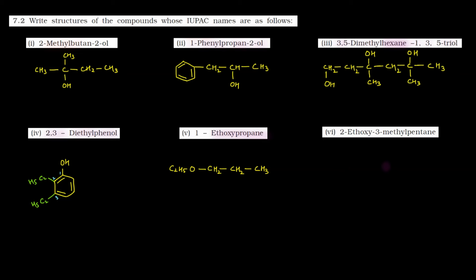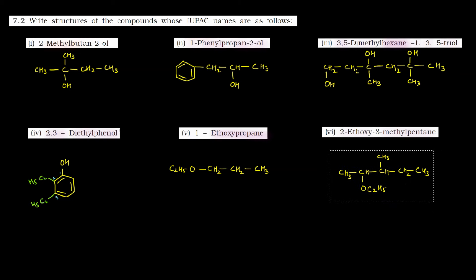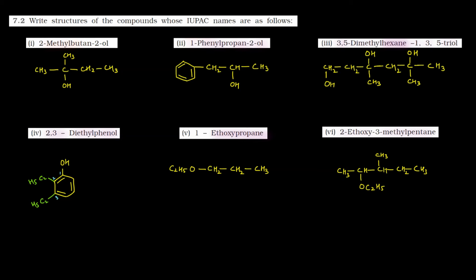Sixth part mein kya banana hai — 2-ethoxy-3-methyl pentane. Wapas se banayenge 5 carbon atoms ki chain, kyunki parent chain toh wahi hai. So this is 1, 2, 3, 4, and 5. Second position par hai ethoxy, ethoxy ka matlab kya hua — O–C2H5. Aur third position par kya hai — methyl group. Toh ban gaye aapke paas. Valency complete kar do: CH, CH, CH2 aur CH3. Yahan ne kya banaya — 2-ethoxy-3-methyl pentane. Yahan tak clear hai.